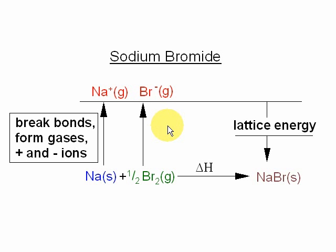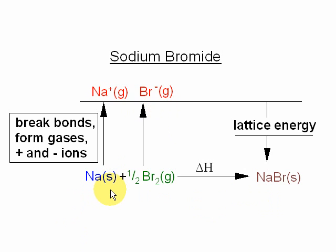Here's an example of a Born-Haber cycle using sodium bromide. We have elemental sodium reacting with elemental bromine to give sodium bromide. The unbonded gaseous ions are therefore the sodium ion as a gas and the bromide ion as a gas. To get from the elements to the unbonded gaseous ions requires breaking bonds, forming gases, and forming positive and negative ions.